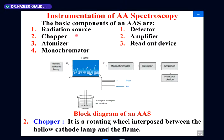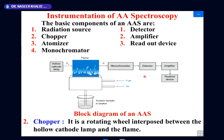These are the basic components again — radiation source, atomizer, monochromator, detector, amplifier, and the readout. This is number 5, 6. This is the atomic absorption spectrophotometer.